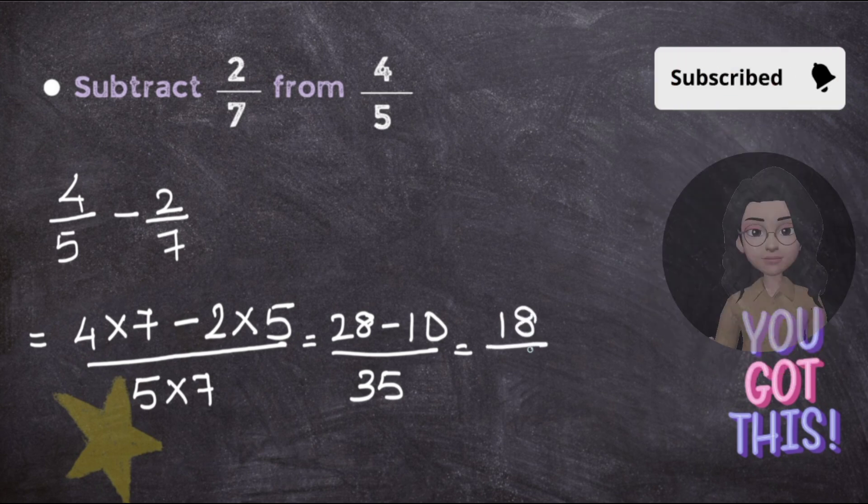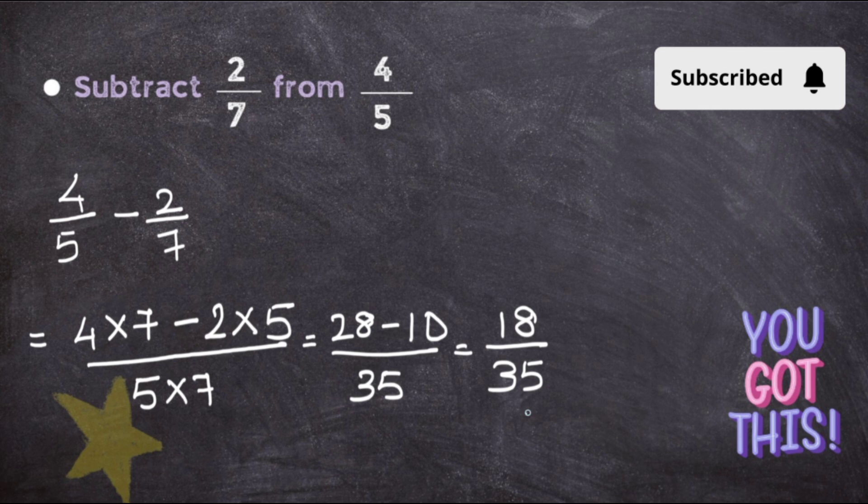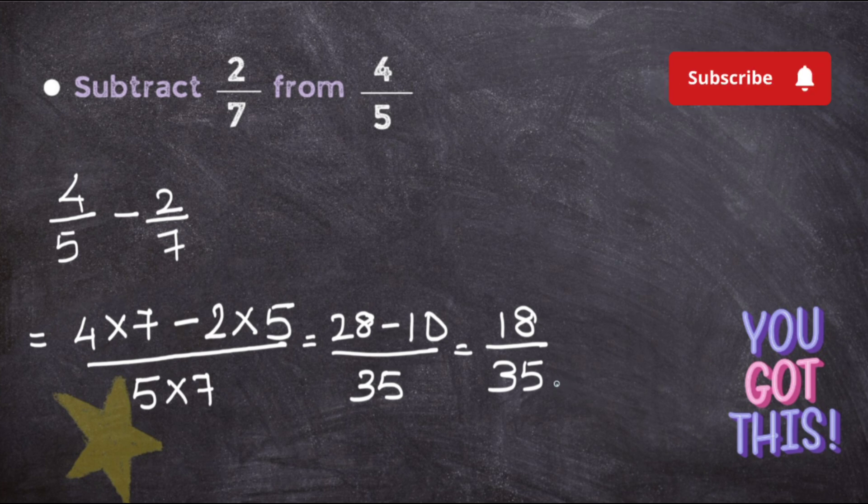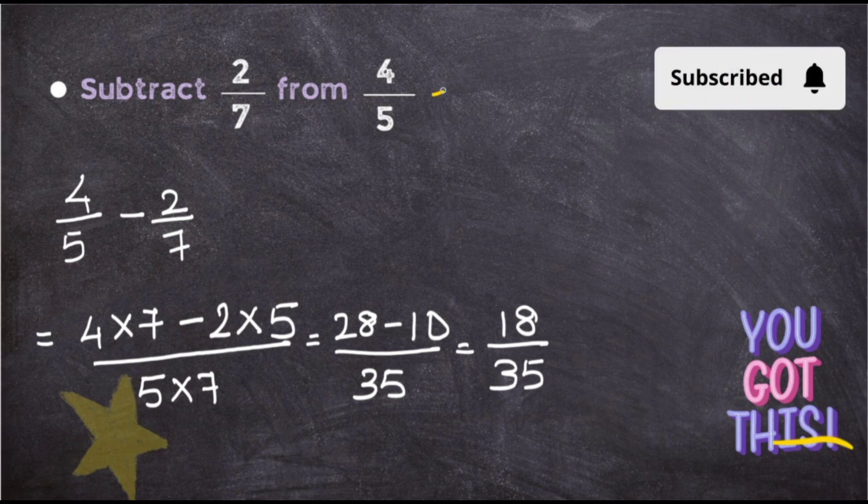28 minus 10 gives you 18 upon 35. Just check whether this number is in the simplest form or can you divide it more. Like, do these two numbers go into the table of any other same number except one? Of course, no, right? So the answer for this question will be 18 upon 35.